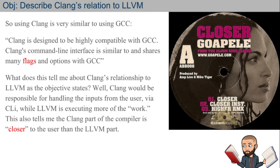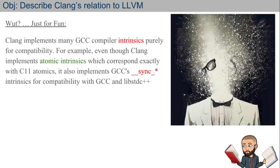Using Clang is very similar to using GCC. Clang is designed to be highly compatible with GCC, sharing many command-line flags and options. Clang implements many GCC compiler intrinsics purely for compatibility. For example, even though Clang implements atomic intrinsics that correspond exactly with C11 atomics, it also implements GCC's sync intrinsics for compatibility with GCC and libstdc++.